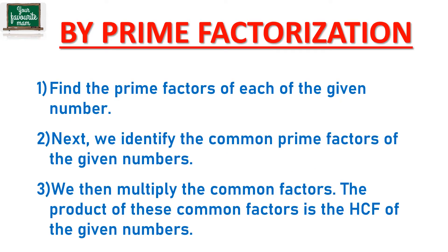So let's start with the prime factorization method first. To find the HCF using prime factorization, we first find the prime factors of each of the given numbers, then we identify the common prime factors between them. The last step is to multiply the common factors to get the HCF of all the given numbers.